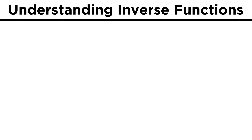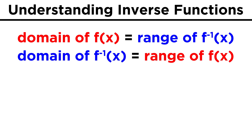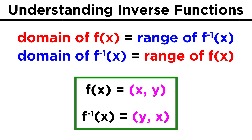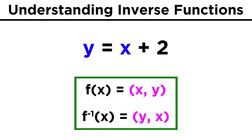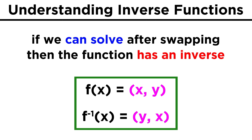Let's point out a few things about inverse functions. We should note that the domain of f is equal to the range of f inverse, and the domain of f inverse is equal to the range of f. In other words, if f is the set of ordered pairs (x, y), then f inverse is the set of ordered pairs (y, x). This is evidenced by the fact that we switch the positions of x and y when finding the inverse function. If after we switch them we find that we are unable to solve for y, then the function does not have an inverse. If we are able to solve, it does have an inverse.